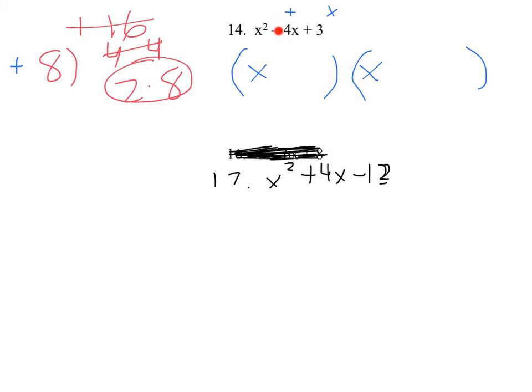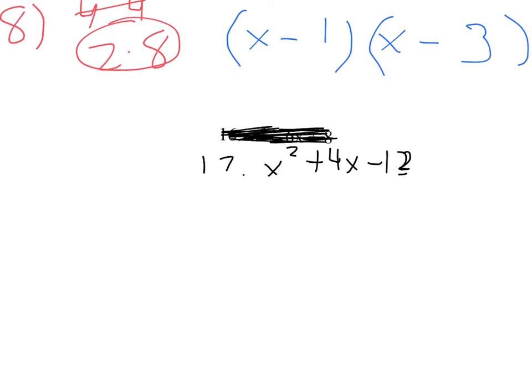What this tells me right here is that it's going to be minus minus, because when I add them up, it has to be a negative. So my signs are the same, because it's a positive 3, and they're both negative, because I'm going to add up to a negative 4. Now this is pretty simple, because the only two numbers that you can multiply together to get 3 are 1 and 3, and when I add those up, I am going to get a negative 4.